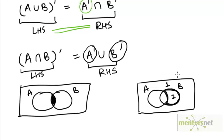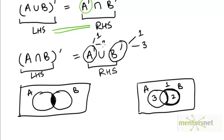We have to take the union of these two regions with B complement. B complement is everything outside of the circle representing B, found in two regions. The first is region 1, which is outside of both A and B. The other is region 3, which is outside of B but inside of A. So B complement is made up of regions 1 and 3, and A complement is made up of regions 1 and 2. When we take the union of these two sets, we get regions 1, 2, and 3.